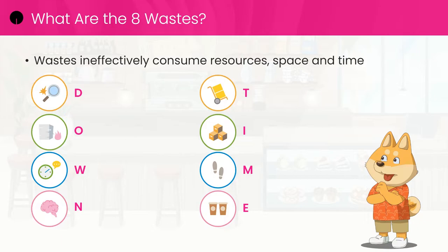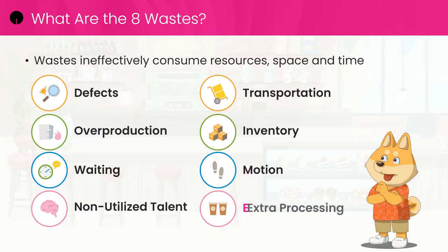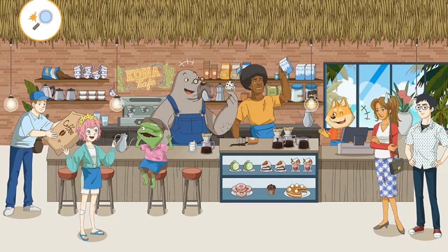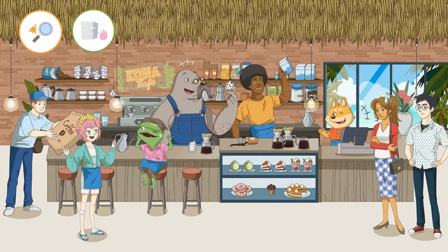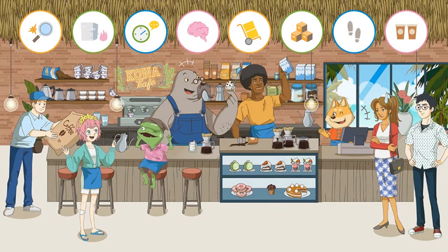DOWNTIME stands for defects, overproduction, waiting, non-utilized talent, transportation, inventory, motion, and extra processing. All eight wastes may not be present in a process, but knowing what to look for can help identify those that impact your process.